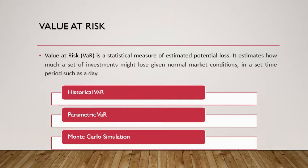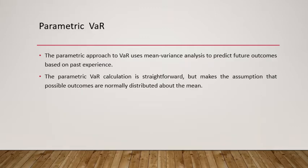VaR is calculated using different methods — we have historical VaR, parametric VaR, and Monte Carlo simulation. In this video I am only talking about parametric VaR. The parametric approach to VaR uses mean-variance analysis to predict future outcomes based on past experience. So basically, whatever the past data has been, we use that to arrive at the VaR.